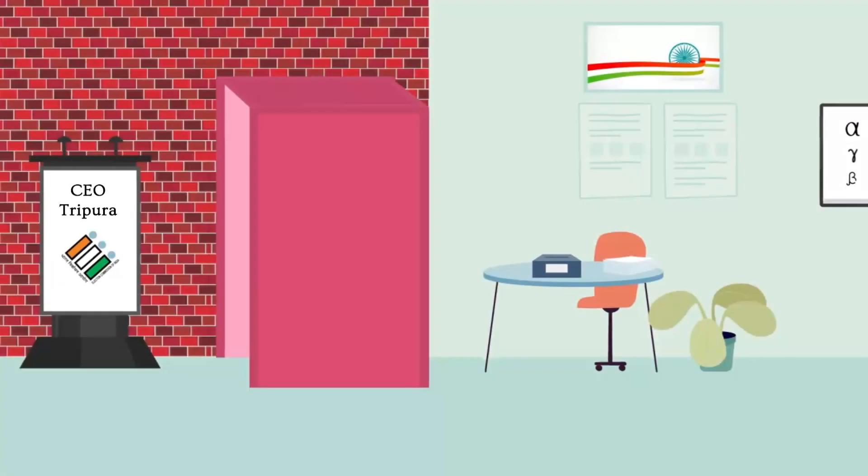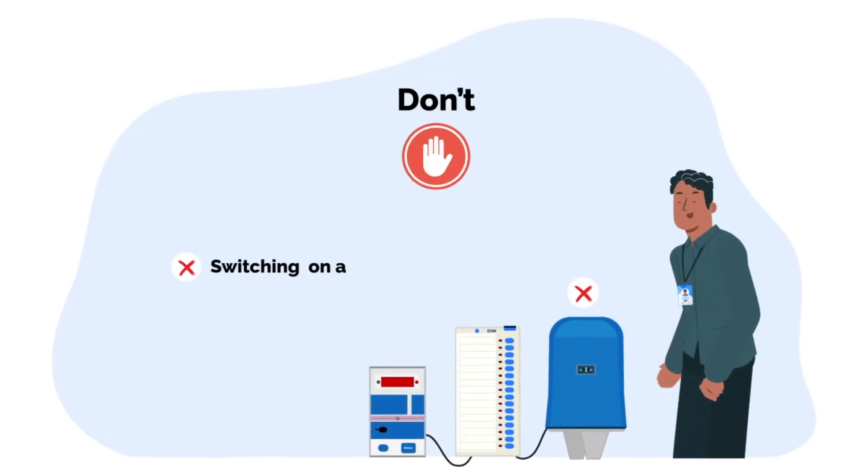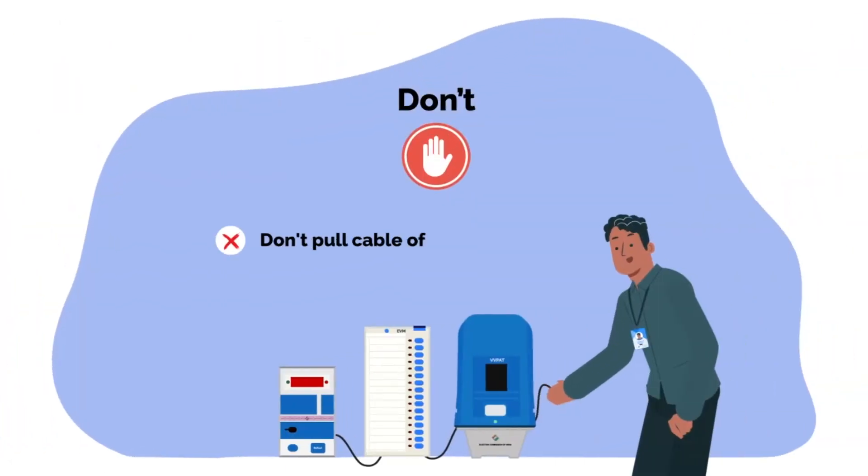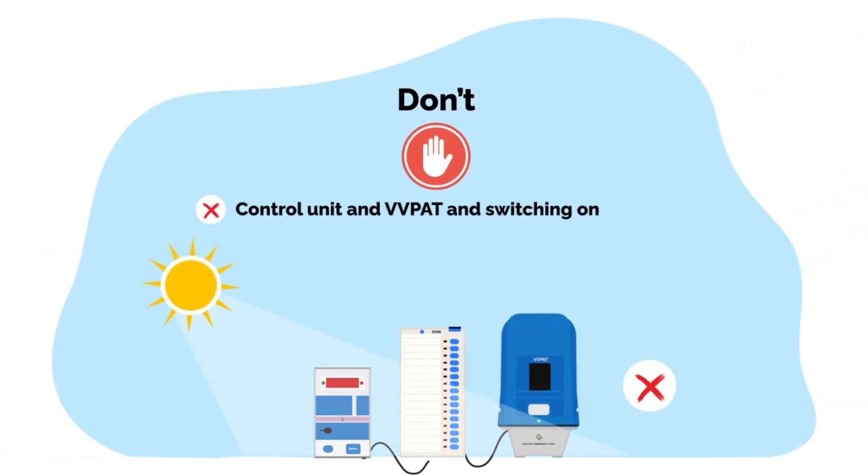Don't forget to conduct mock poll on 5% randomly selected EVMs and VVPATs. Don't forget to shred VVPAT slips generated during commissioning on a daily basis. Don't repeatedly switch on and off the VVPAT. Don't pull cable off BU and VVPAT while disconnecting from CU. Don't connect ballot unit, control unit, and VVPAT during dispersal. Don't switch on VVPAT in broad daylight.